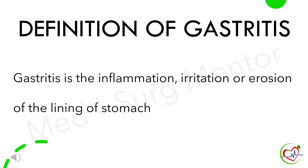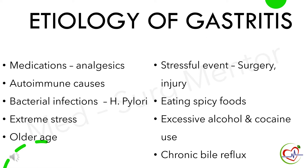Definition of gastritis: it is the inflammation, irritation, or erosion of the lining of the stomach. Common etiologies of gastritis are medications such as analgesics and aspirin, autoimmune causes, bacterial infections — most commonly Helicobacter pylori infections — extreme stress, older age, stressful events such as surgery and injury, eating very spicy foods, excessive use of alcohol and cocaine, and chronic bowel reflux.